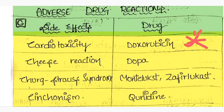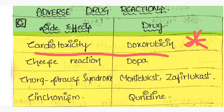The cheese reaction is caused by dopa. This is also very very important for GPT orientation.